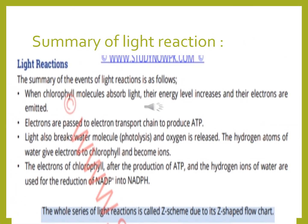Here is the summary of light reaction. When chlorophyll molecules absorb light, their energy level increases and their electrons are emitted. These electrons are passed to the electron transport chain to produce ATP. Step 3: light also breaks the water molecule and oxygen is released; the hydrogen atom of water gives electrons to chlorophyll and becomes an ion. Step 4: the electrons from chlorophyll after the production of ATP, and the hydrogen ions from water, are used for the reduction of NADP into NADPH. The whole series of light reaction is called the Z scheme, due to its Z-shaped flow chart.